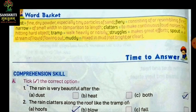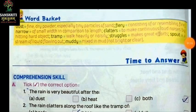Next is clatters. Clatters means to make continuous loud noises by hitting hard objects. Clatters kya hota hai? Clatters means khat khat aana. Means koi ek object par baar baar marna, jis se aawaz aati hai na usse. Khat khat aati hai kisi bhi cheez ko. To usse aawaz aati hai, to usko hum kya bolte hai? Clatters.